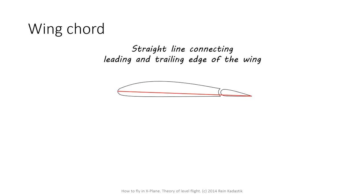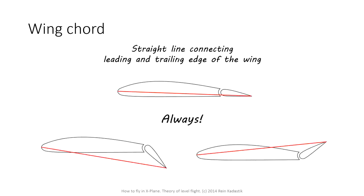Next term: wing chord. Wing chord is a straight line connecting the leading and trailing edge of the wing — always. If the leading or trailing edge of the wing can move, the wing chord follows. For example, with ailerons: on the left picture, the aileron is moved down; on the right picture, it is moved up. The red line — the wing chord — always connects the leading and trailing edge of the wing.